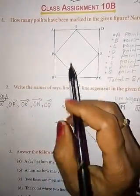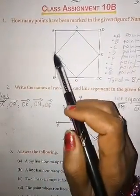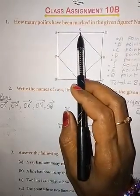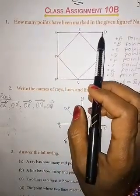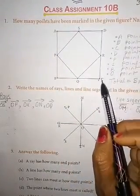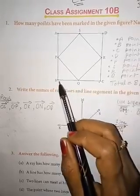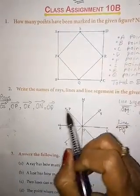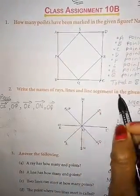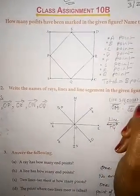Count how many dots are in this figure: 1, 2, 3, 4, 5, 6, 7, 8. Total 8 points in this figure.